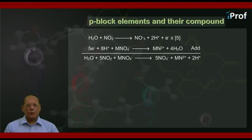That is, H2O plus NO2 gives NO3 minus plus 2H+ plus electron. Multiply this half equation by 5. 5 electrons plus 8H+ plus MnO4 minus give Mn2+ plus 4H2O. If we add the two half reactions so as to cancel out the electrons, the net reaction is: H2O plus 5NO2 plus MnO4 minus giving 5NO3 minus plus Mn2+ plus 2H+.